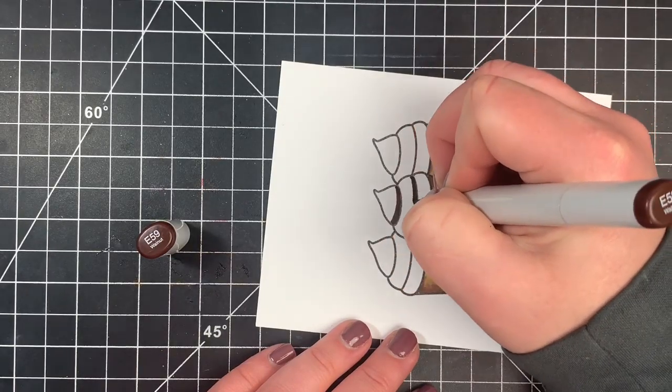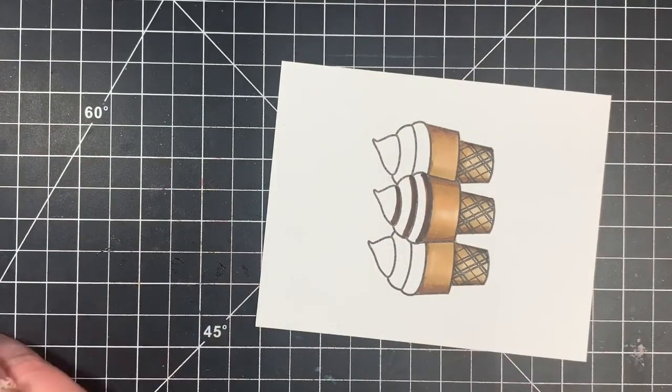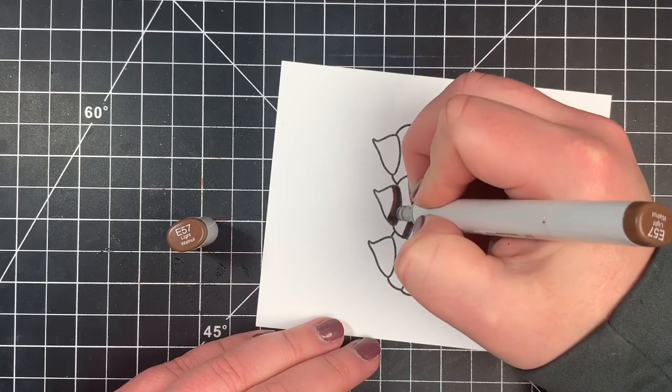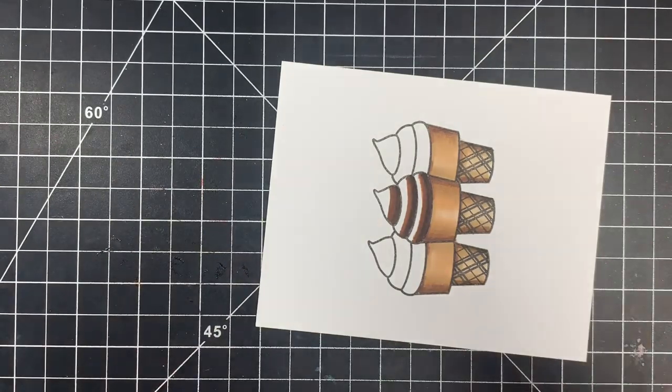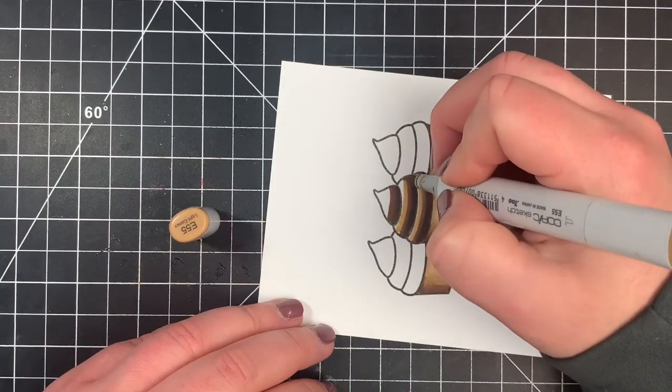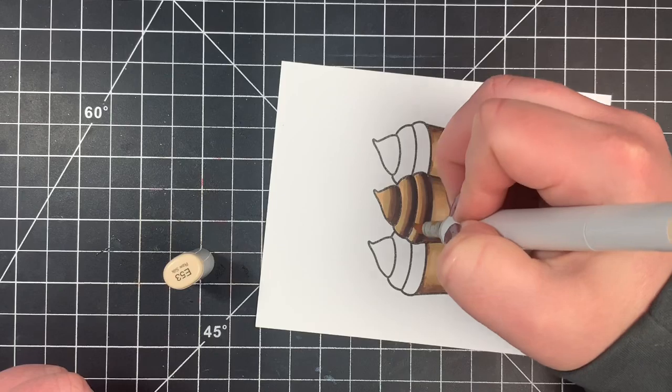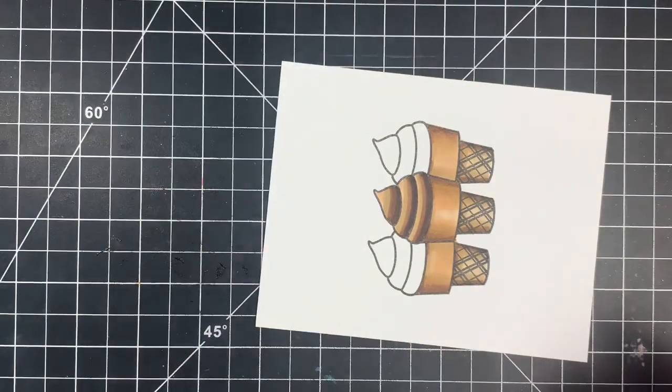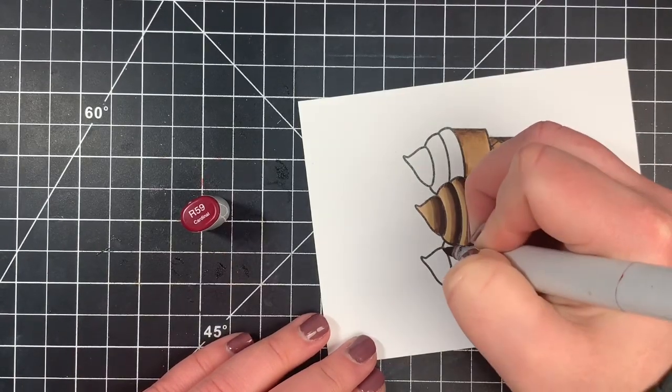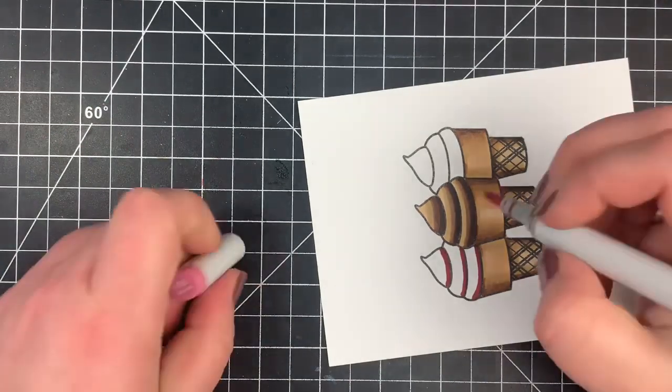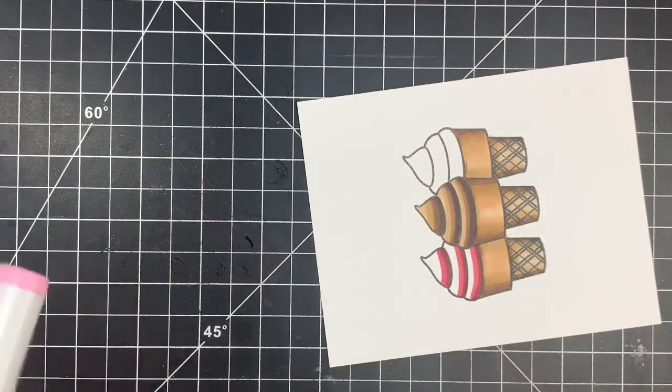Starting with the chocolate, I'm going to keep my E50s. I'll start with the E59, which is darker than the cone. I'm just outlining each section of the ice cream, then blend it out with the E57, E55, and finish with a highlight with that E53. I started with my darkest color because I want this to have a lot of dimension and I don't want to overblend it. For the strawberry, I'm doing the same thing, putting my shadows and highlights in the same area, starting with that darkest color again.